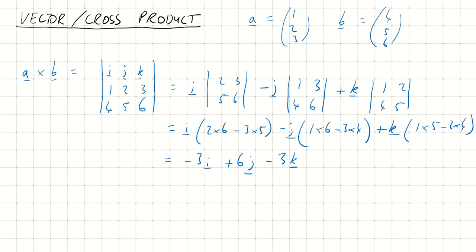OK, and that's it. What I've worked out is that A cross B is, putting my I, J, K answer as a column vector, it's minus 3, 6, minus 3. That's what A cross B is.